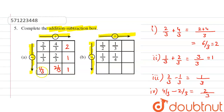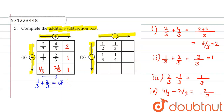You can verify it by adding in this direction: 1/3 plus 2/3 equals 1 plus 2 over 3, which is 3/3 equals 1. So this is correct.